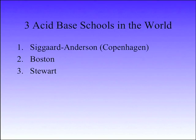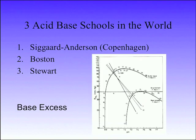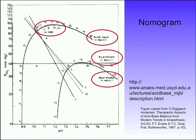I'm going to take you through the three acid-base schools in the world. First is the Siggaard-Andersen group from Copenhagen. They're the guys who came up with base excess. The Siggaard-Andersen nomogram is very complicated — it has things like buffer base, bicarb, base excess, and something else that gets very confusing.